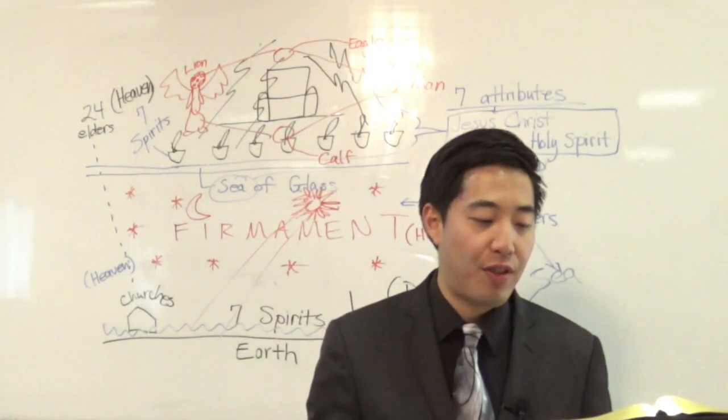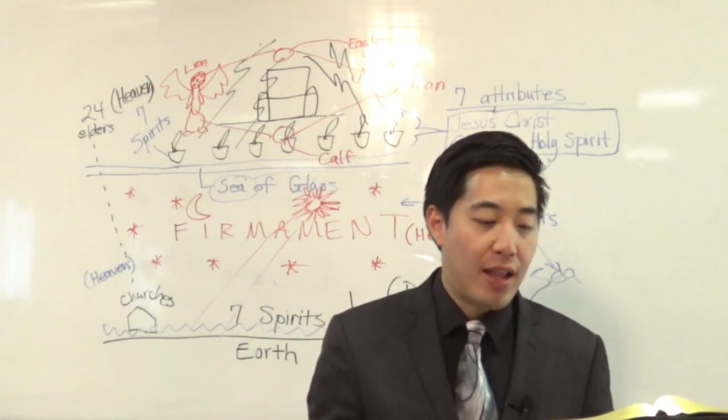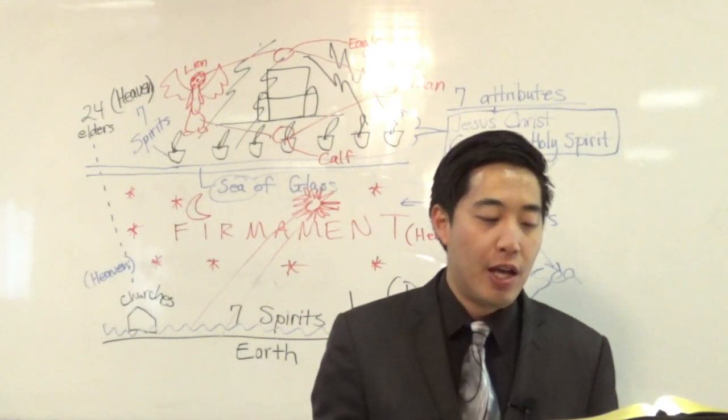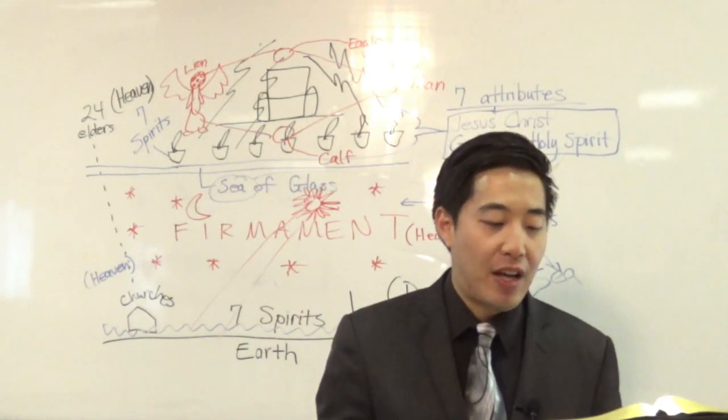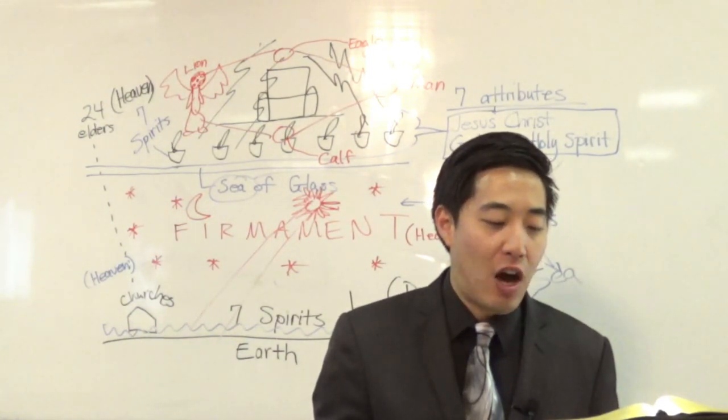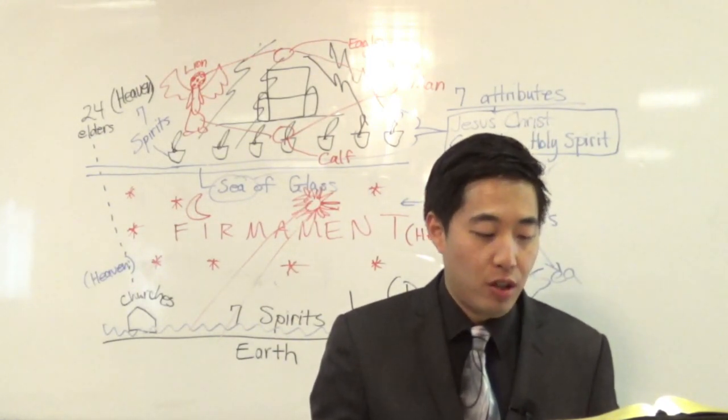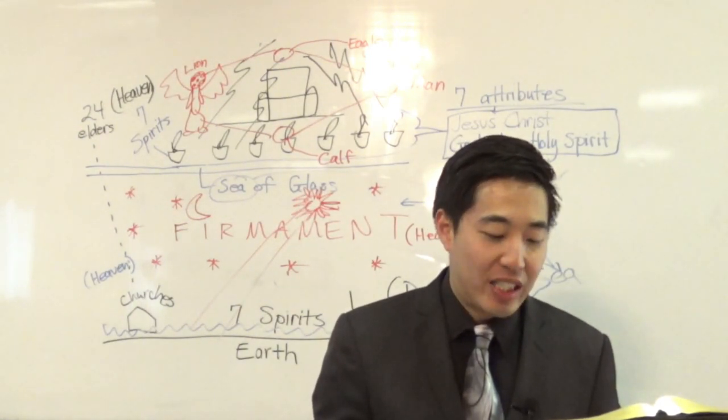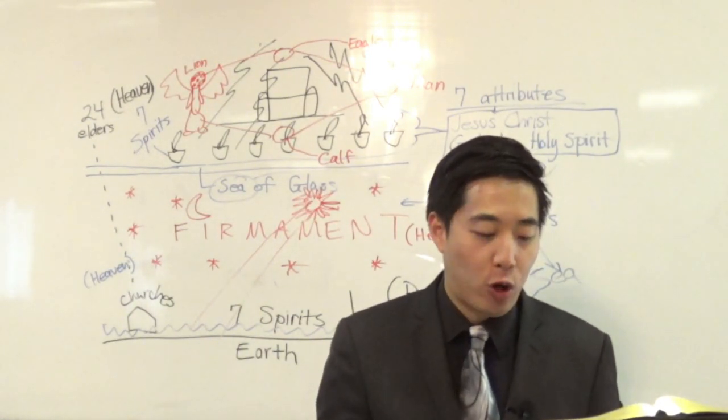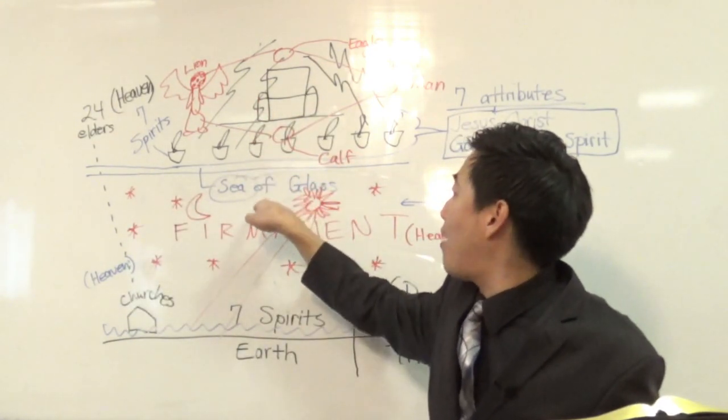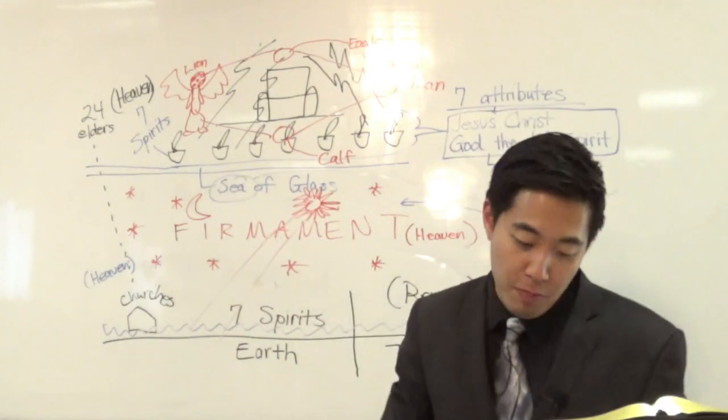As for the likeness of their faces, they four had the face of a man and the face of a lion on the right side, and they four had the face of an ox on the left side, and they four also had the face of an eagle. Notice there is your answer right there. But notice, this is no doubt the same four creatures who are surrounding this throne up in heaven, which is above the firmament, because keep reading.